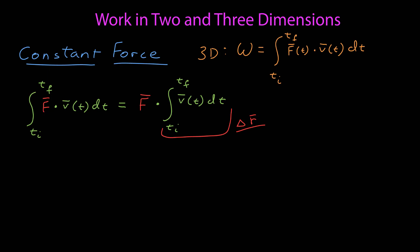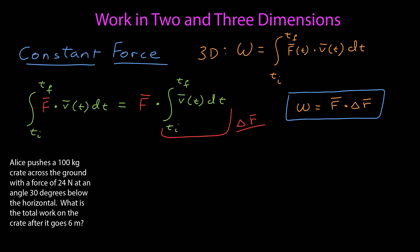So that gives me, for a constant force, the work is simply the dot product between that constant force vector and the displacement vector. Let's do a quick example. Alice pushes a 100 kilogram crate across the ground with a force of 24 newtons at an angle of 30 degrees below the horizontal. What is the total work on the crate after it goes 6 meters? That means we have to find the work of all of the forces. So here's a picture of Alice pushing the crate. Since it's along the ground, I know that the velocity has to be horizontal to the ground.